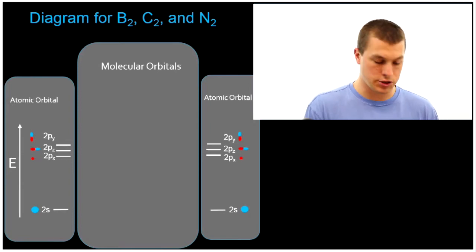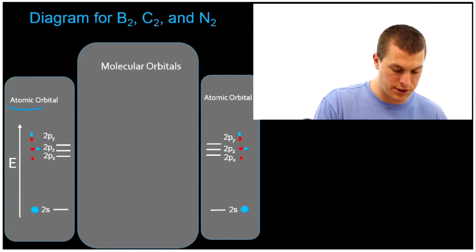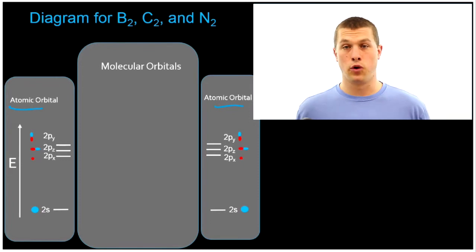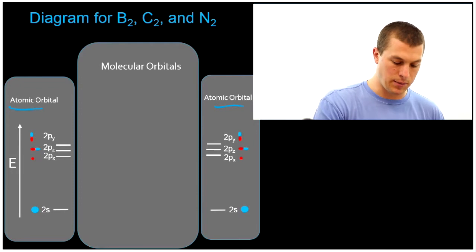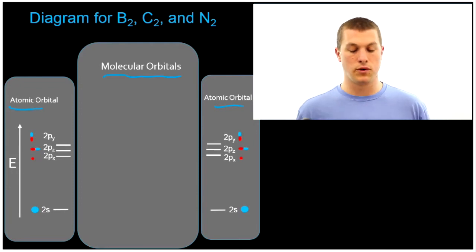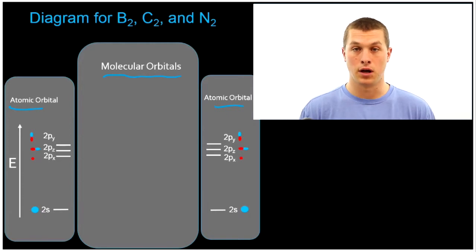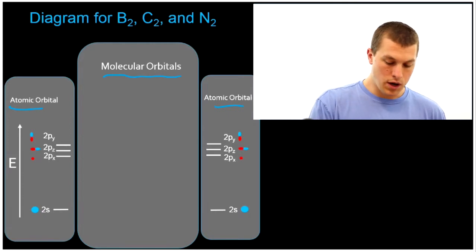So, to get you oriented on what this chart's doing, we have our atomic orbitals here and here. So that's sort of like the before picture. We're thinking about our two atoms separately, and then they're going to come together and bond. And that's where we're thinking about our molecular orbitals. So you can really think about the left and right panels as being like before, and the center panel being like after bond formation.